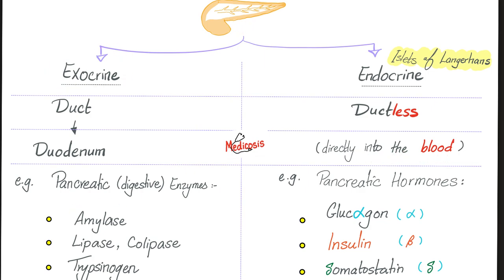The exocrine pancreas secretes enzymes — your digestive enzymes. But the endocrine pancreas secretes hormones, not enzymes. Examples of these enzymes include pancreatic amylase, lipase, colipase, trypsinogen, and chymotrypsin. The hormones are glucagon, insulin, and somatostatin. Glucagon is from the alpha cells of the islets of Langerhans. Insulin is from the beta cells. Somatostatin is from the delta cells.